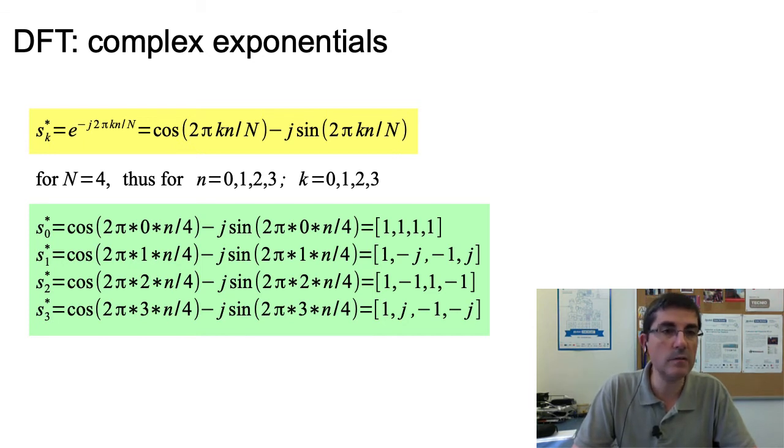Then S_1 will be the frequency 1, and that will be one cycle of a complex sine wave. S_2 will be frequency k=2, and S_3 will be k=3. So, a signal of size N=4 will be projected into these 4 sine waves, which each one being of size 4.